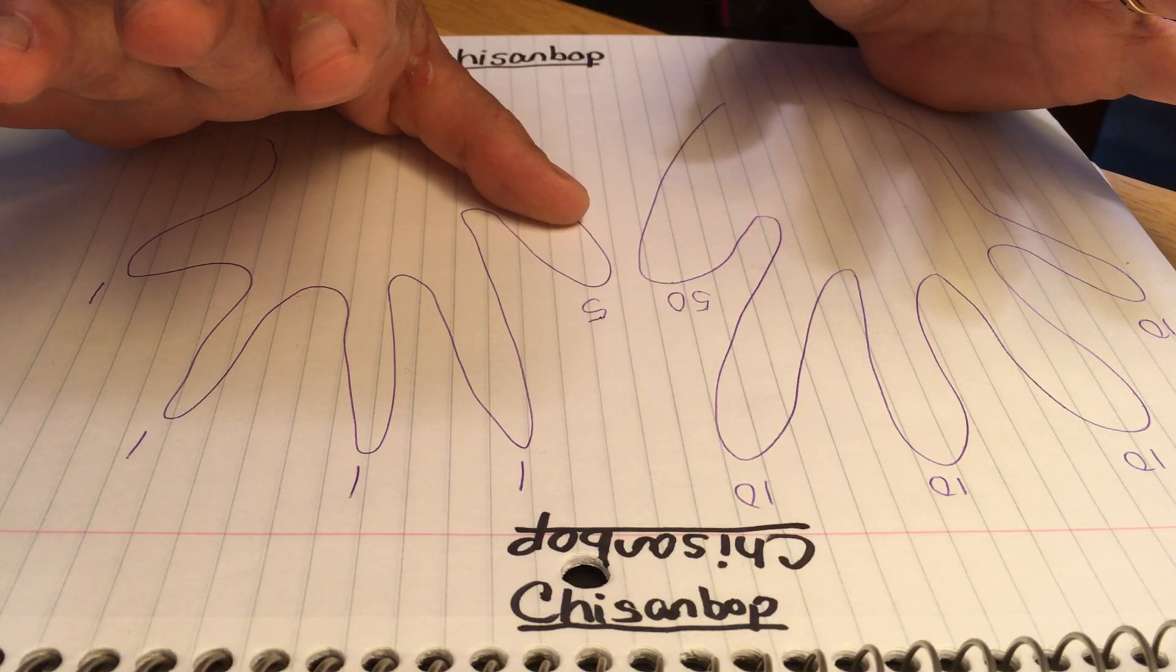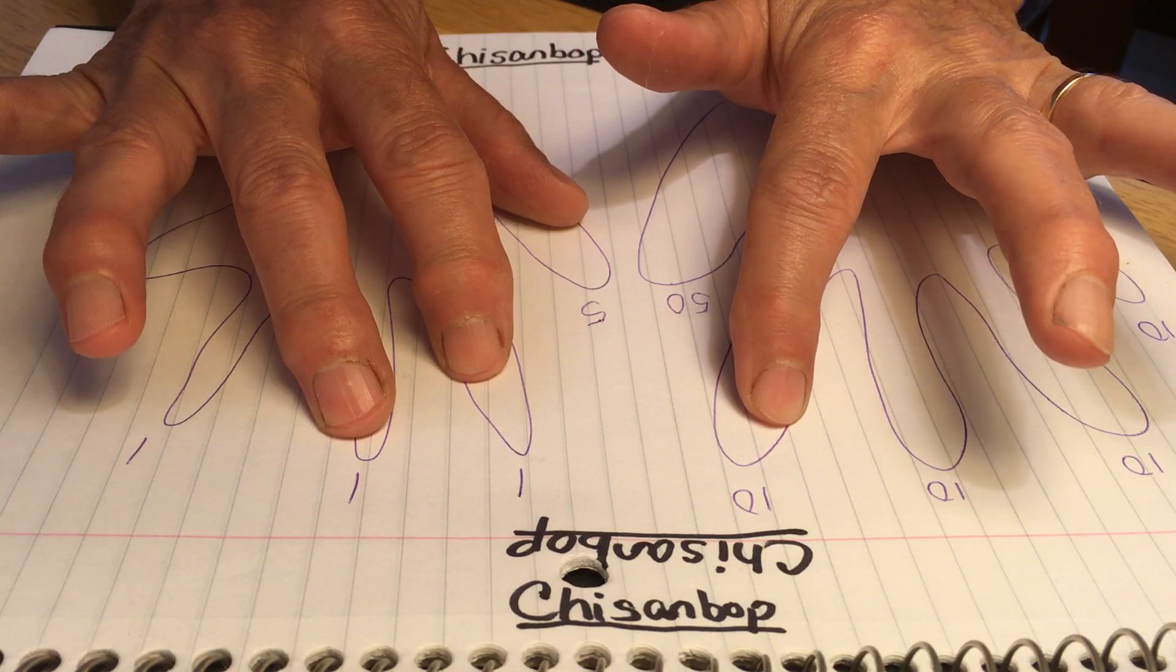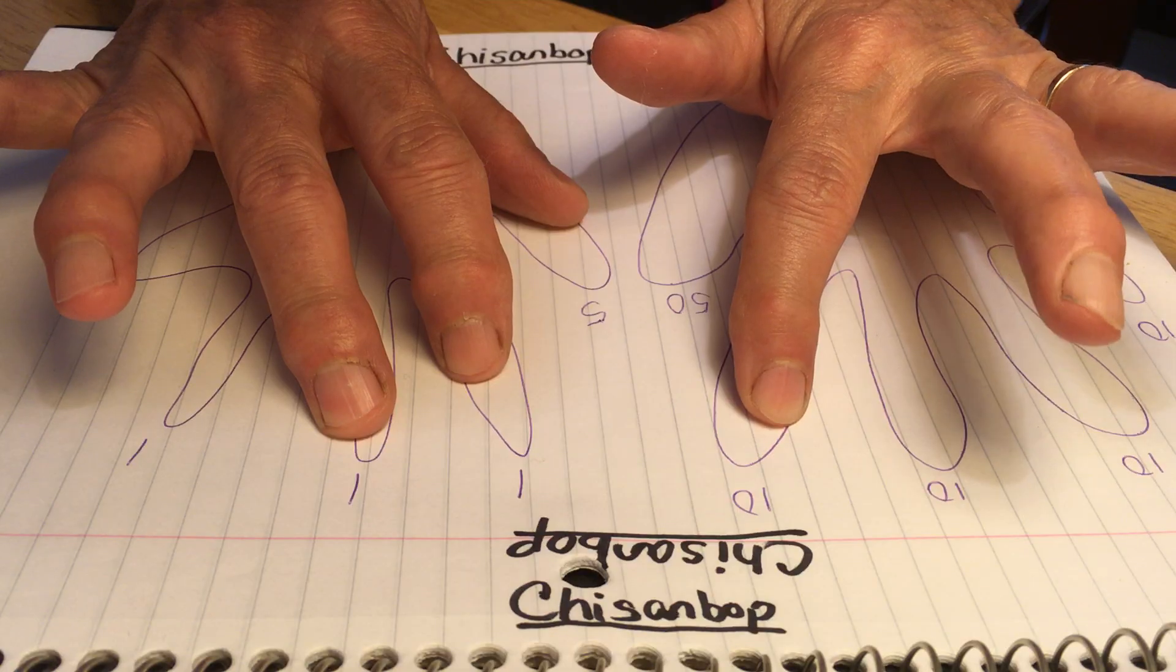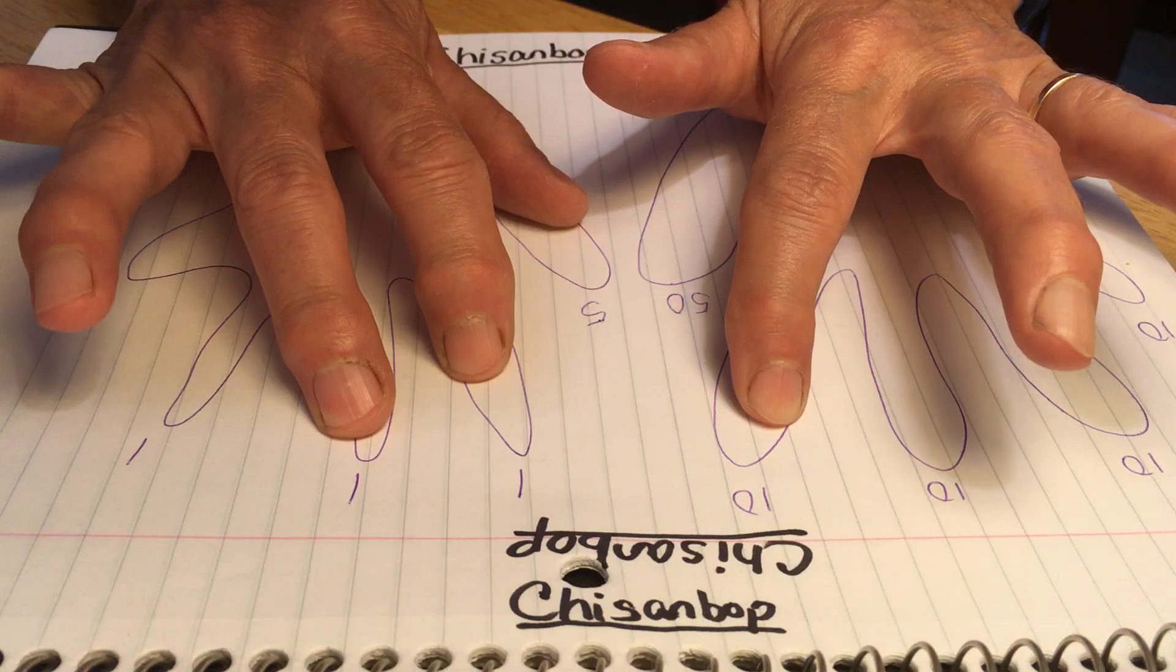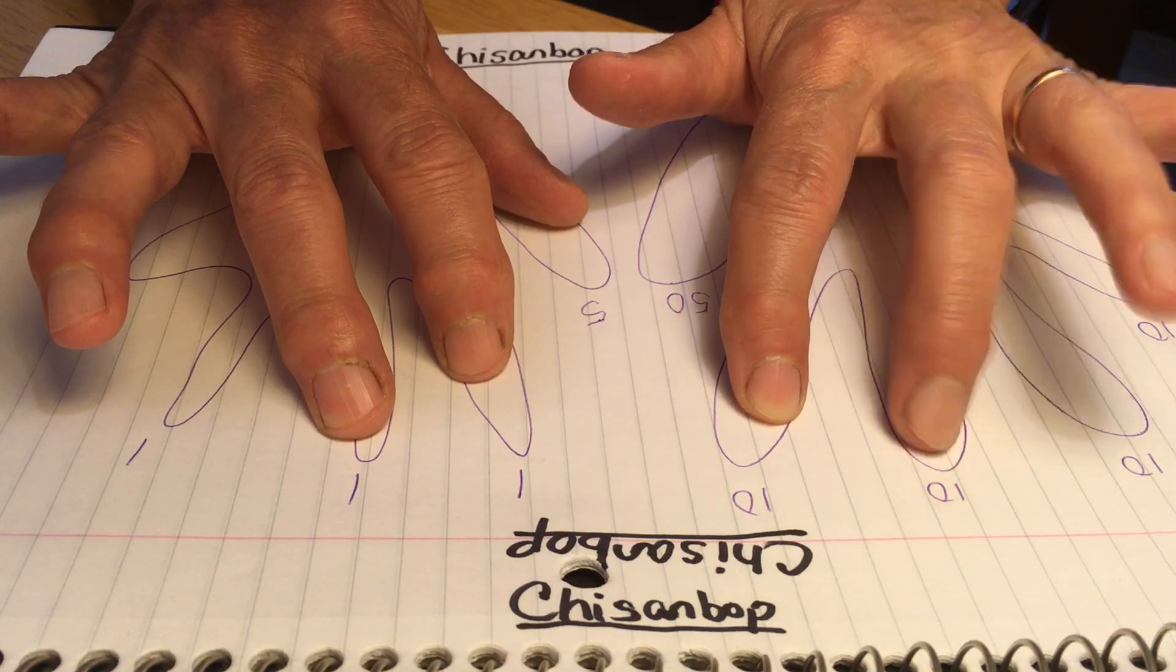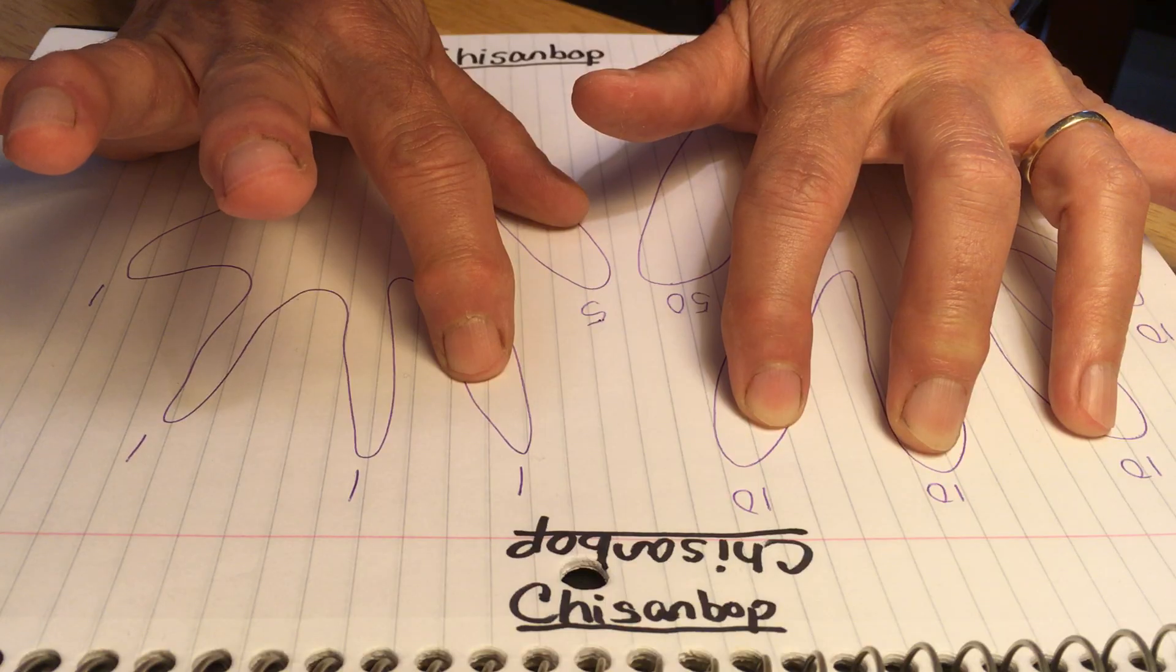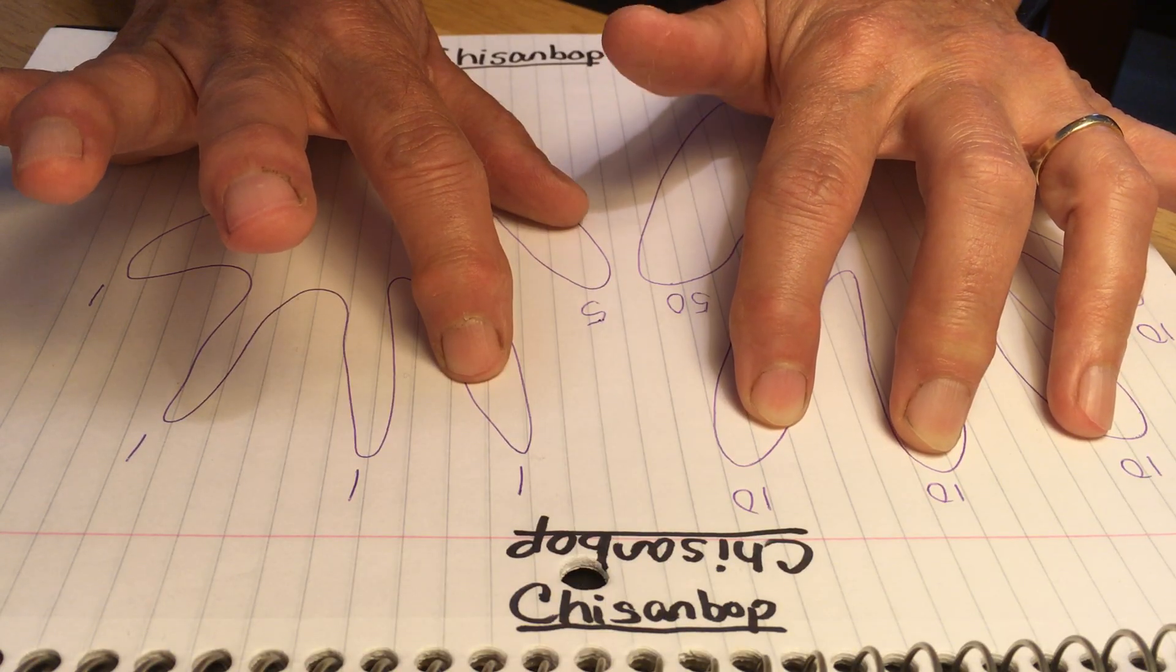5 plus 12, that's 10 and 2. So far I've got 17. 5 plus 12 plus 19. Now here's tricky: 19 I could say is 20 minus 1, so let's try that to make it quick. That would be 2 tens which is 20, take away 1. So my total running sum is now 36.